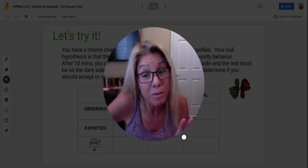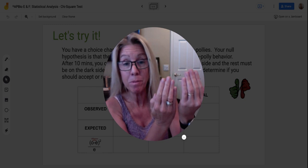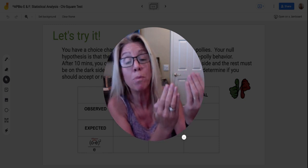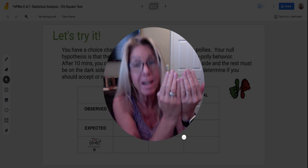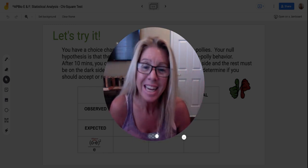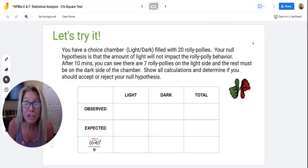But if it's overwhelmingly different, then by rejecting the null, you're accepting an alternative, you're supporting an alternative hypothesis that says there is a connection between the amount of light and roly-polies that you have. That's another whole video, but I wanted to take a minute.